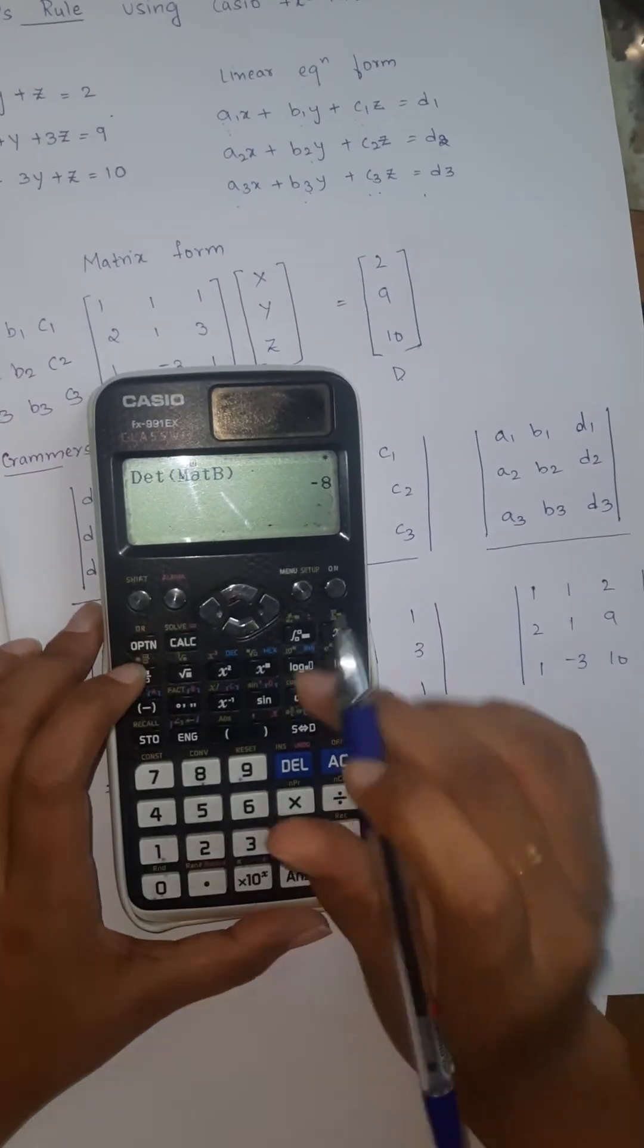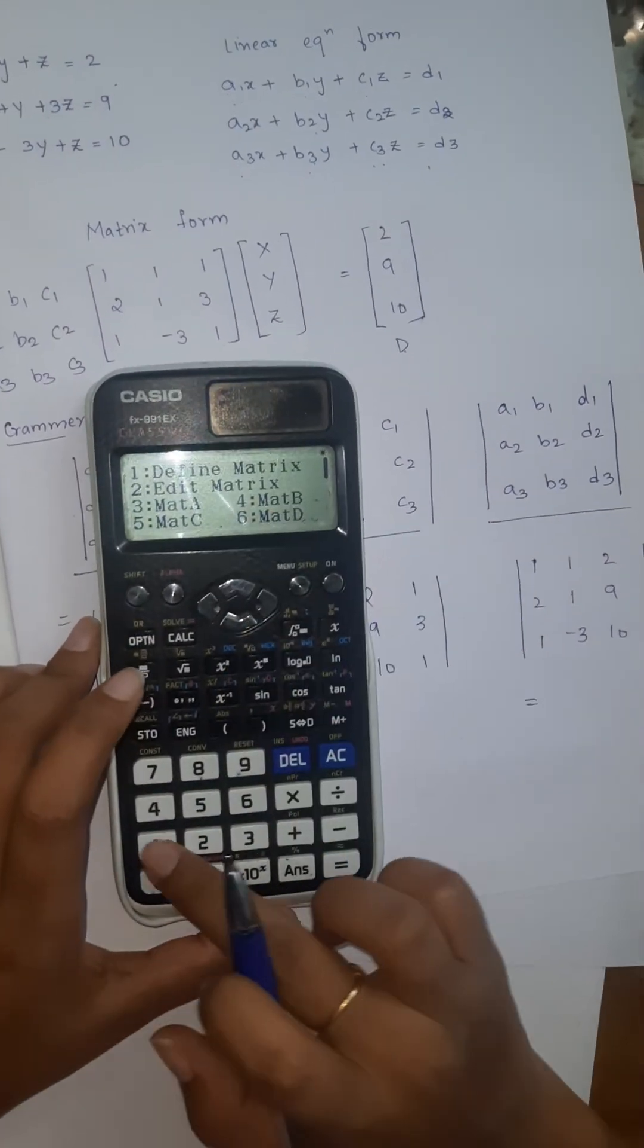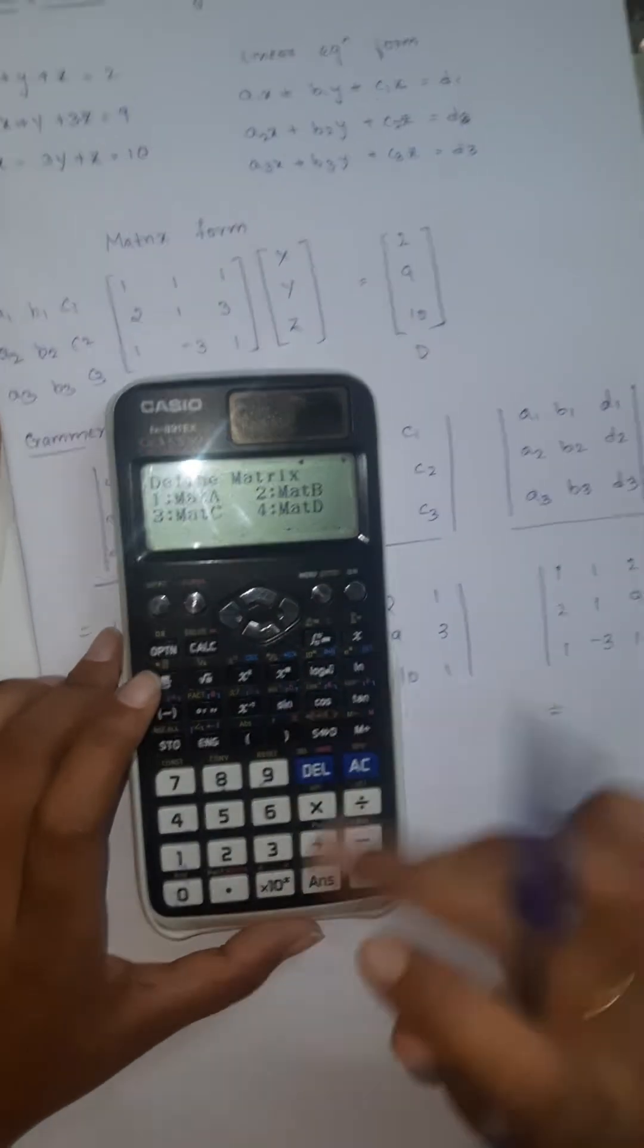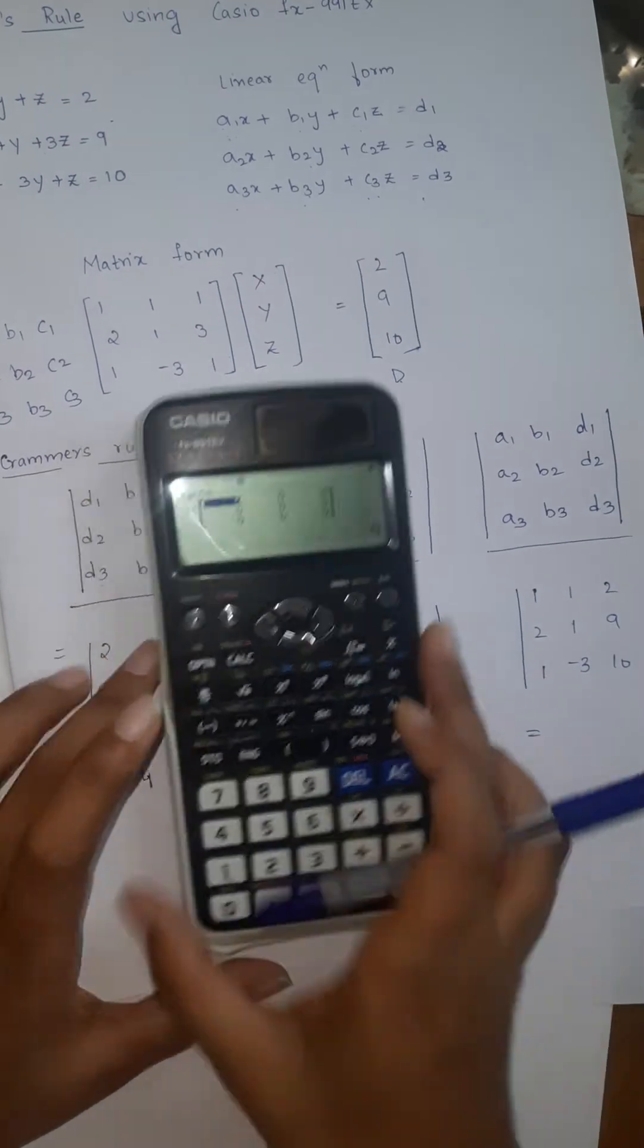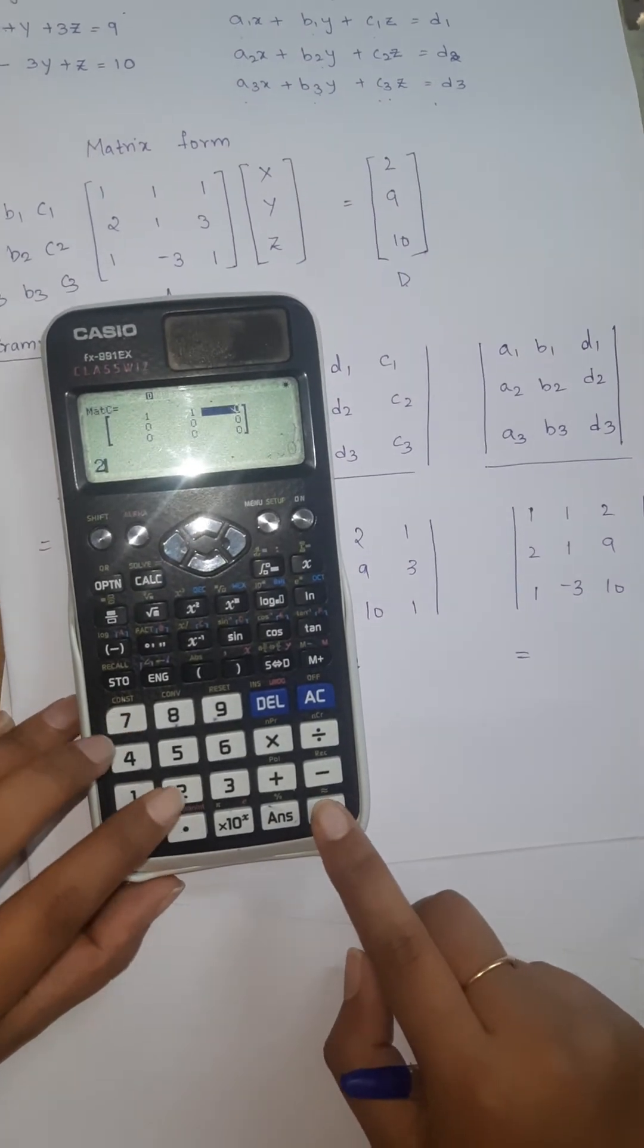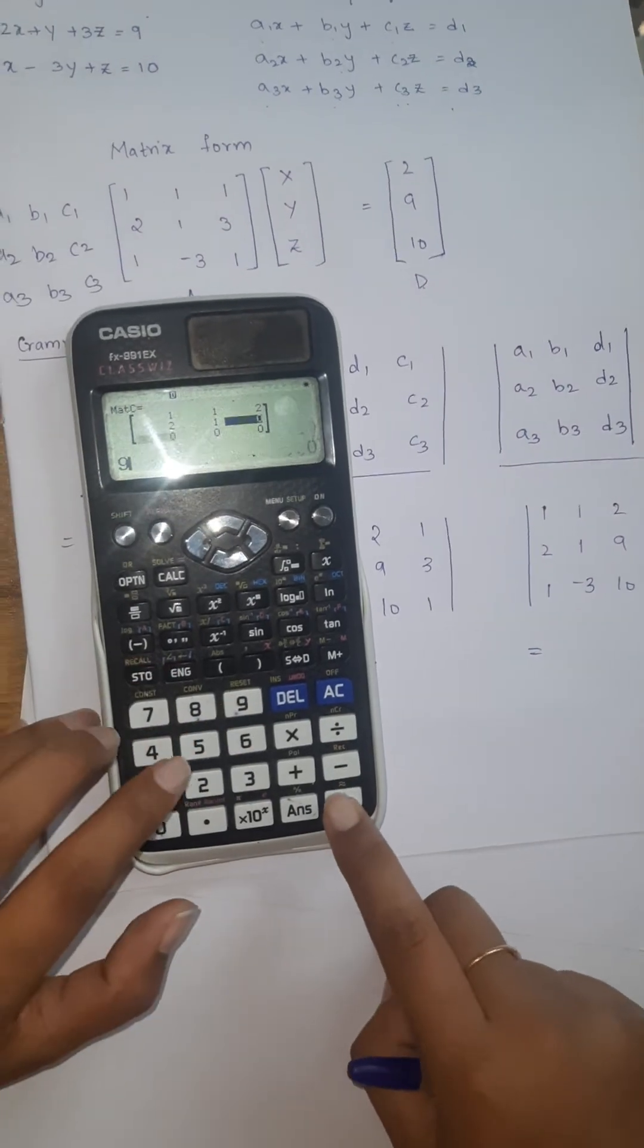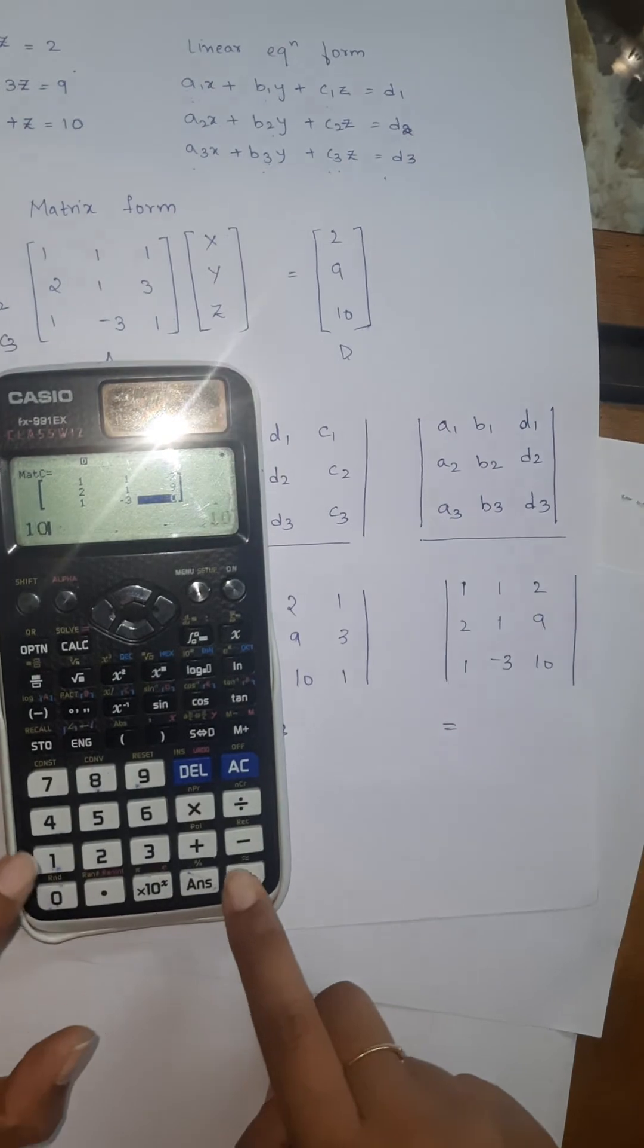Do the same thing for next matrix. Go to option, define a matrix. This time matrix C we are selecting. Number of rows 3, number of columns 3. Now I am defining the matrix: 1 equals 1 equals 2 equals 2 equals 1 equals 9 equals 1 equals minus 3 equals 10.